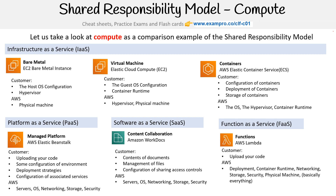We could have included a few other services that didn't fit on this slide, like AWS Fargate, which is a serverless container as a service. That has its own unique properties in the shared responsibility model as well.